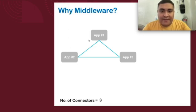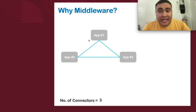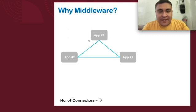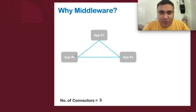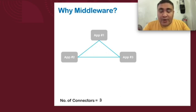Let's start from why do we need a middleware. For example, in a given situation wherein you have three applications and you would want to integrate them — and if you remember from our previous discussion, integrate means you provide connection or make them interconnected with each other. So we have application one, application two, and application three, and each application is interconnected by two or more pipelines.